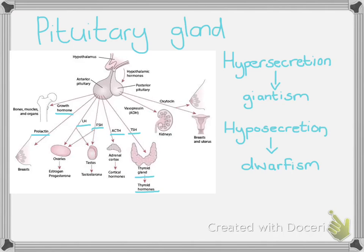Pituitary dwarfism is different to achondroplasia, which is another kind of dwarfism that some people may be more familiar with. In achondroplasia, the arms and legs are particularly shorter than the torso and head. This is due to a genetic disorder where the cartilage between the bones has not grown correctly, and in particular the long bones of the legs and arms don't successfully elongate to a standard height.